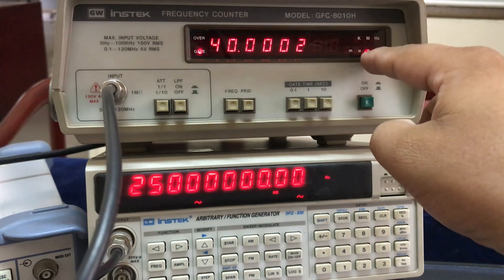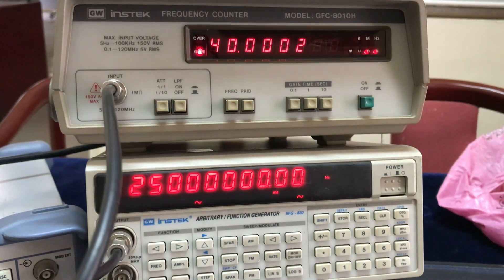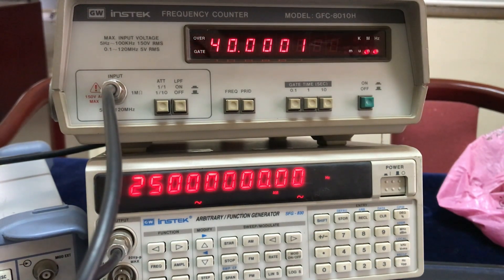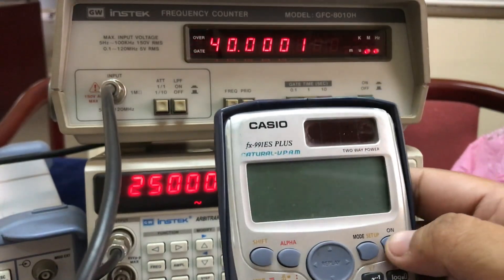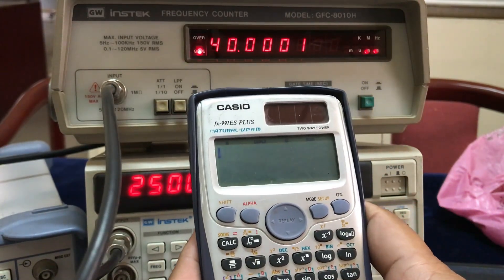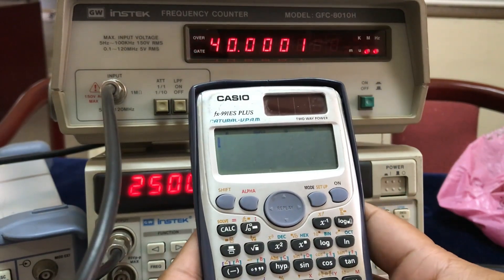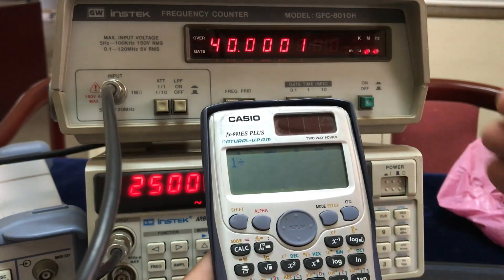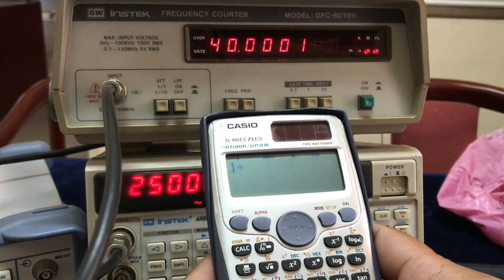Let's just quickly do the calculation. Period is one over frequency, so one divided by frequency is period. One over the frequency, which is 25 mega, 25 times 10 to the 6.